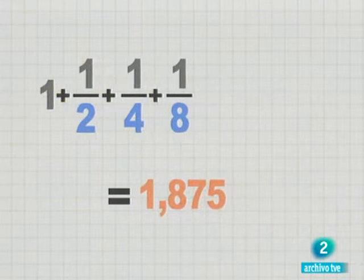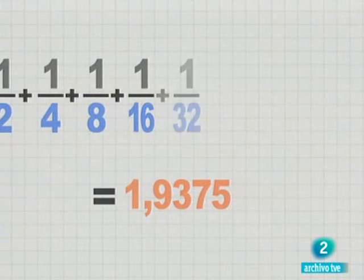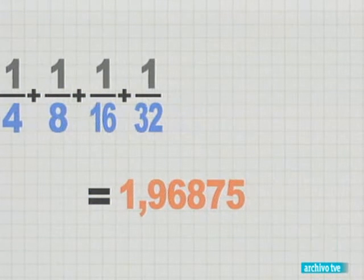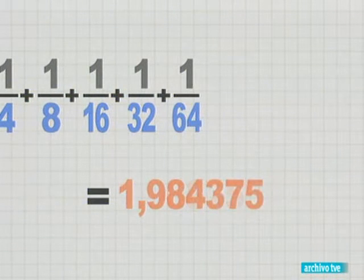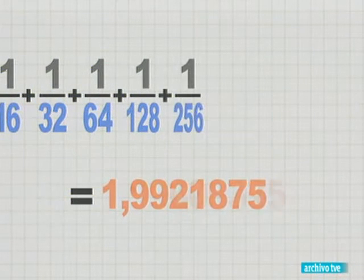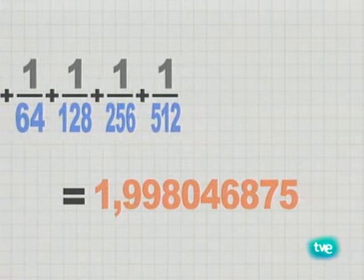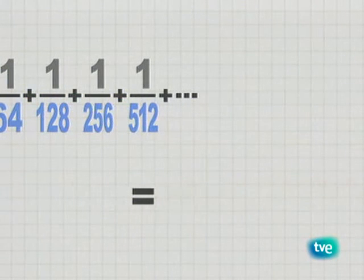Esta es una serie infinita. Está formada por infinitos sumandos cada vez más pequeños. Un reto para los matemáticos a partir de Newton y Leibniz fue descubrir el valor de la suma de series como esta. A pesar de sumar infinitos sumandos, el resultado es un número pequeño, dos.